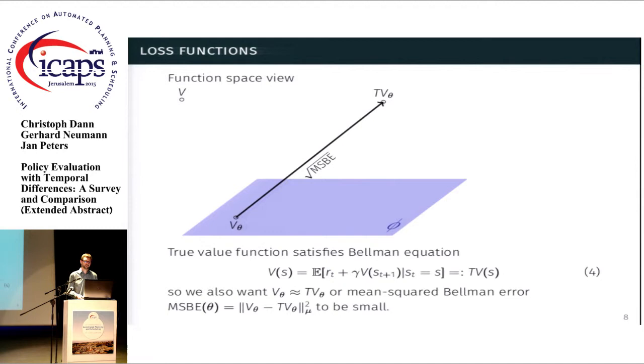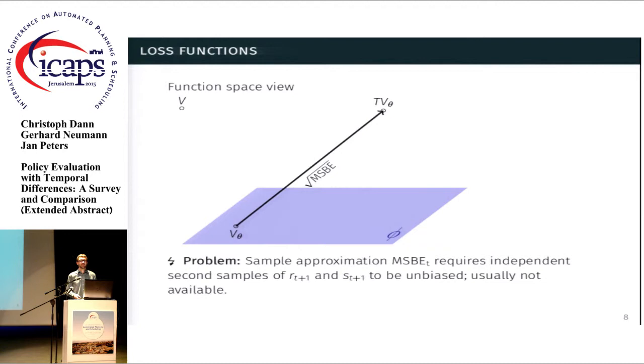But there's also a problem with this estimator because if you want to get an unbiased sample approximation of this error function, you would need a second pair of reward and next state for each transition that we are observing, independent of the first one that we have. And this is typically not available in practice.